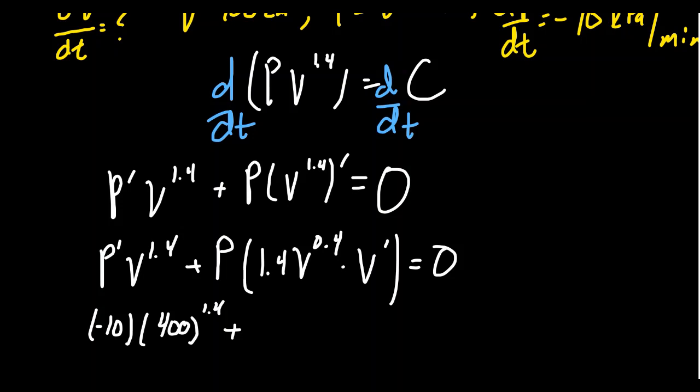So then we're going to plug in the pressure, which we know to be 80 kilopascals. Then we get 1.4 times V to the 0.4, so we're going to get 400 to the 0.4 power. I'm going to be lazy in my computation. And we're going to times that by V prime, which we don't know.